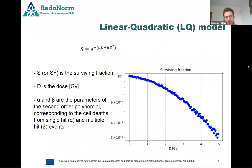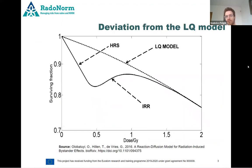With this we can basically predict the surviving fraction at a given dose. But in certain types of tissues we have a deviation from this LQ model — at low doses we start with a lower surviving fraction than we would expect from the LQ model.